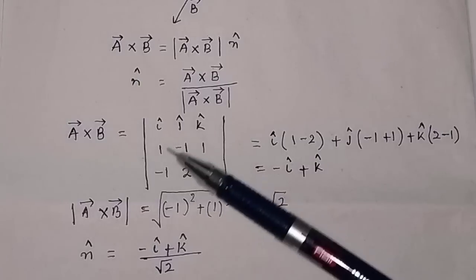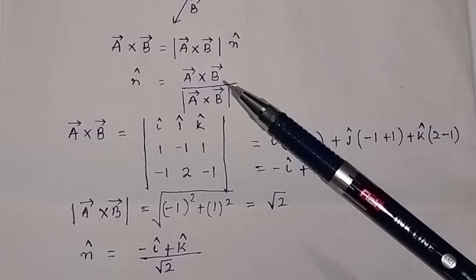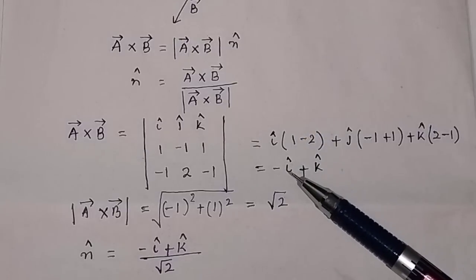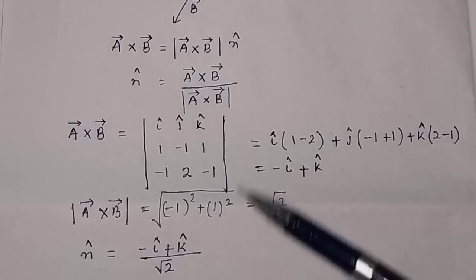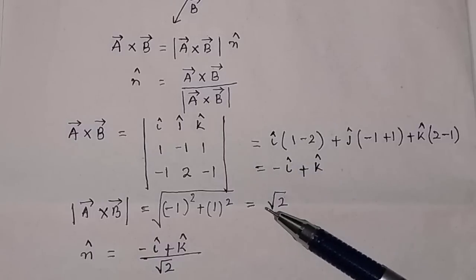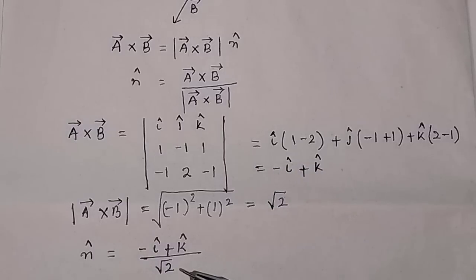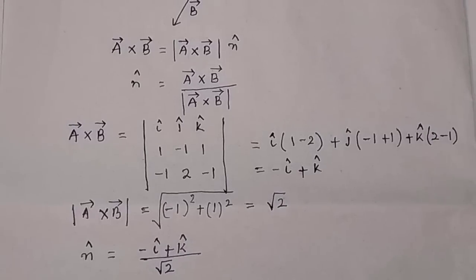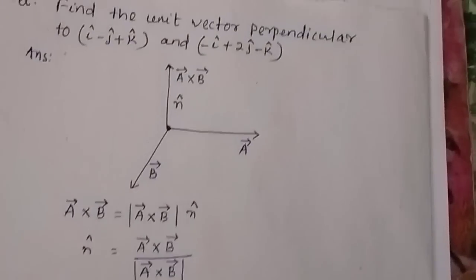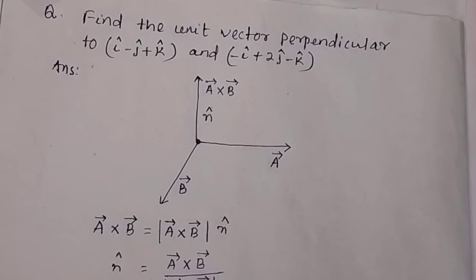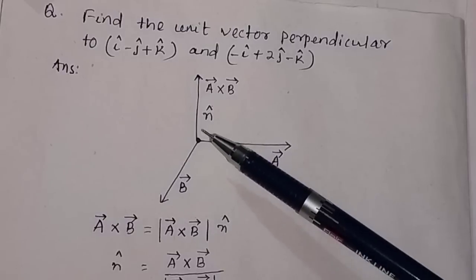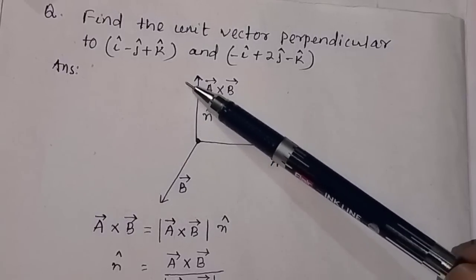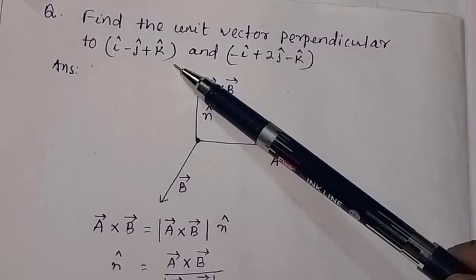So n-cap equals a×b divided by the magnitude of a×b. That is minus i-cap plus k-cap in the numerator, divided by root 2 in the denominator. So the unit vector n-cap is equal to (minus i-cap plus k-cap) divided by root 2, which is perpendicular to the two given vectors i-cap minus j-cap plus k-cap and minus i-cap plus 2j-cap minus k-cap.